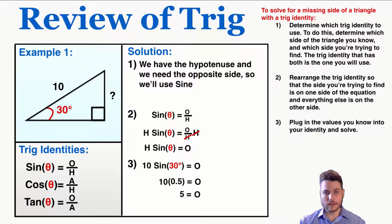So that's how you find the missing side of a right triangle using trigonometry — the answer here is 5.